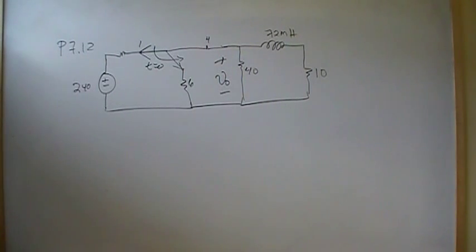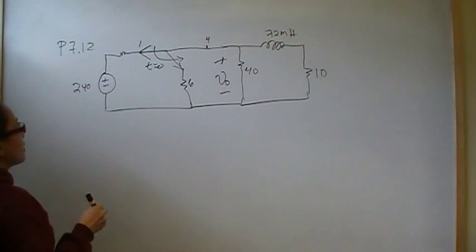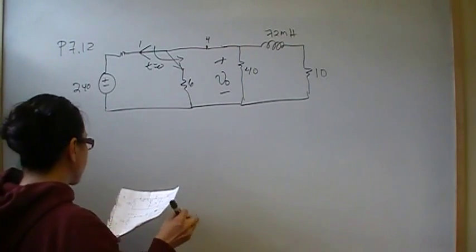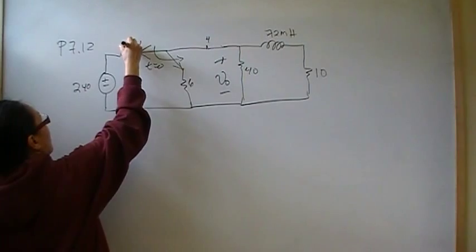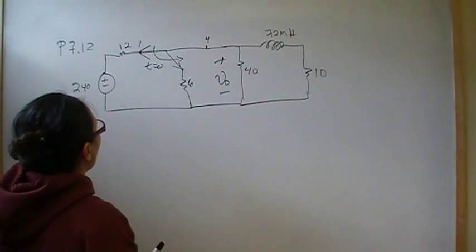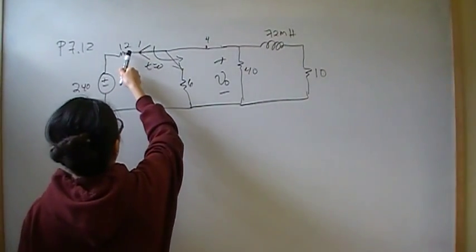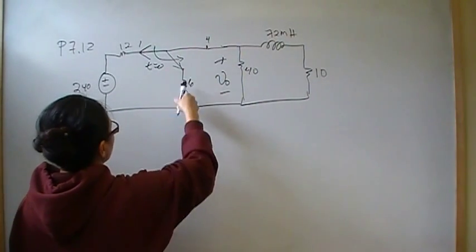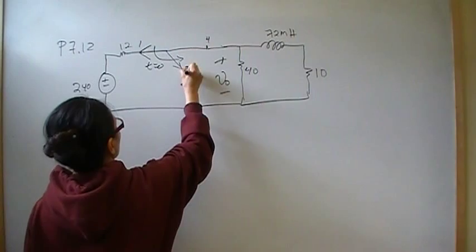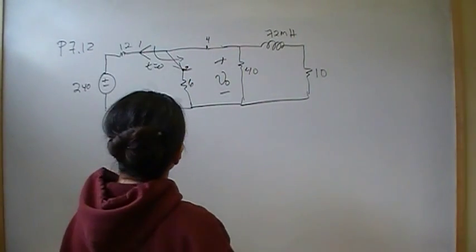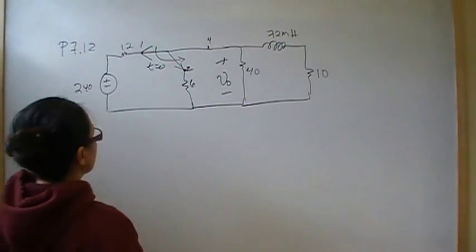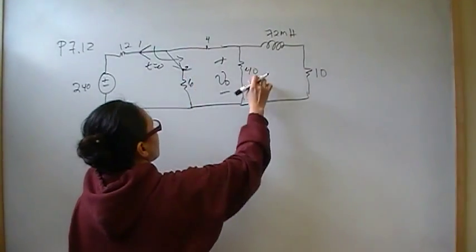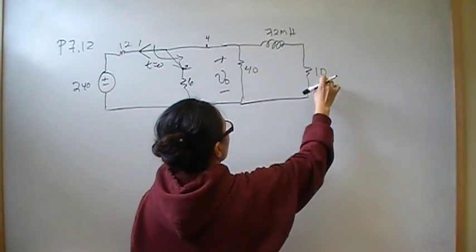So in this problem, we have a 240 volt independent voltage source connected in series with a 12 ohm resistor. And we have a switch that is connected here to the power source and then disconnects at time zero to this point 2 here with a 6 ohm resistor. And then we have 4, 40, 72 millihenrys, and 10 ohms there.